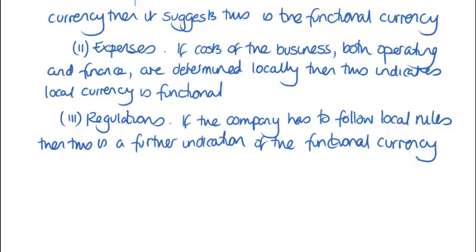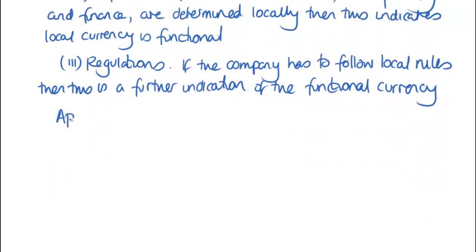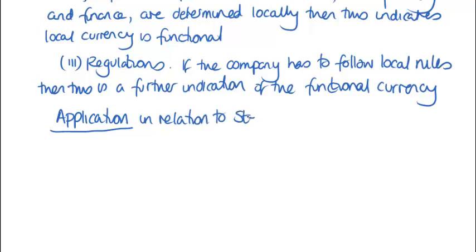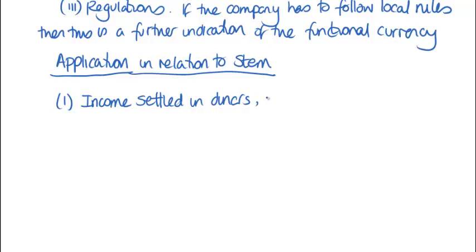That's my broad application of the standard itself. Now let's apply things specifically to the position of STEM. I'm going to have a separate section here. The reason I do this is that if I see the word AND in a question — it says DISCUSS AND APPLY — I immediately think of splitting the question into two smaller parts. We've done the discussion; now we're going to do the application in respect of STEM. First of all, in terms of income, we know that income has been settled using DINAS, so this is indication that DINAS are potentially our functional currency.